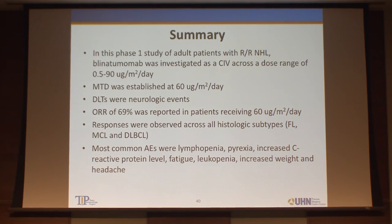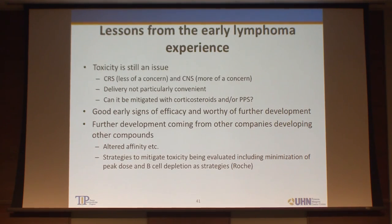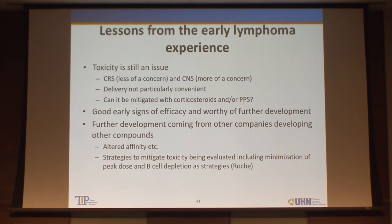Summary of the phase one NHL study: the MTD was established at 60 micrograms per meter squared per day; DLTs as expected were neurologic; overall response rate of about 70% at the 60 microgram per meter squared dose; responses seen across multiple histologies. Lessons moving forward: toxicity is certainly an issue, though CRS may be less concerning in the lymphoma setting now that dosing management is better understood. CNS toxicity remains an issue, and delivery — as a continuous infusion — can be improved. We need to learn whether toxicity can be mitigated with PPS or corticosteroids. Efficacy certainly meets the bar for further development.